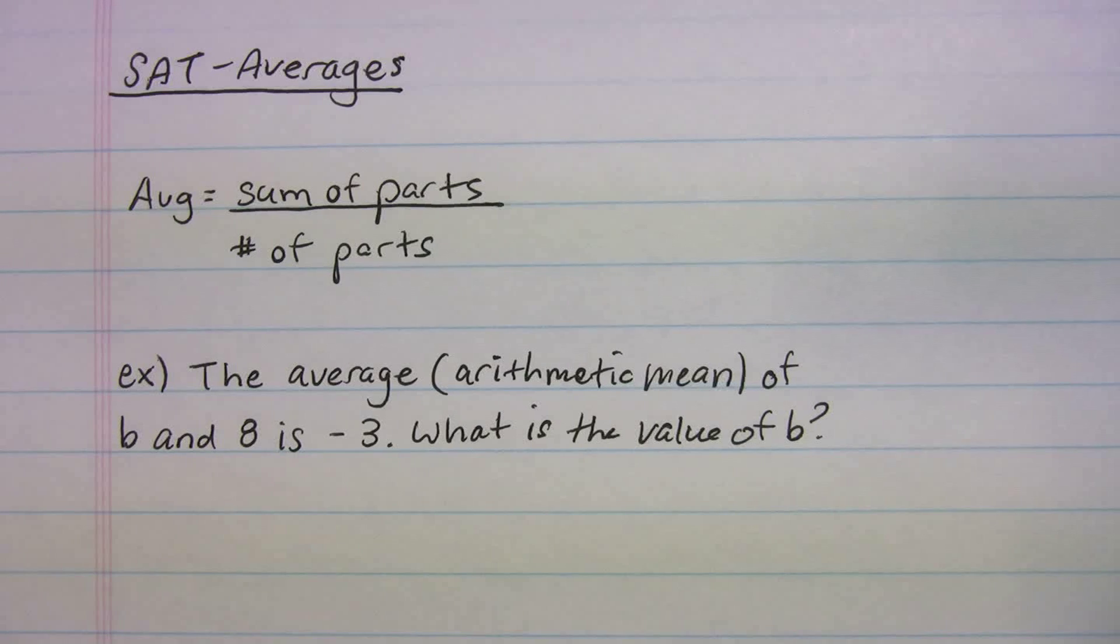So we know that the average is equal to the sum of the parts divided by the number of parts. And this shouldn't be too foreign to you, because remember back in high school when I was trying to figure out what's my average for math this year. What did I do? You added up all the tests and divided by how many tests there were. So that's all you're doing here. You add everything up and you divide by how many things you had.